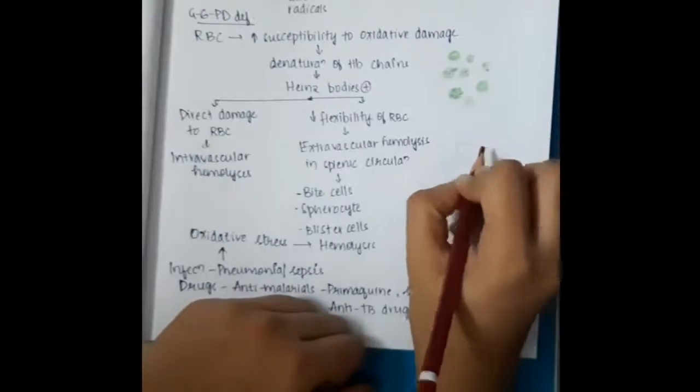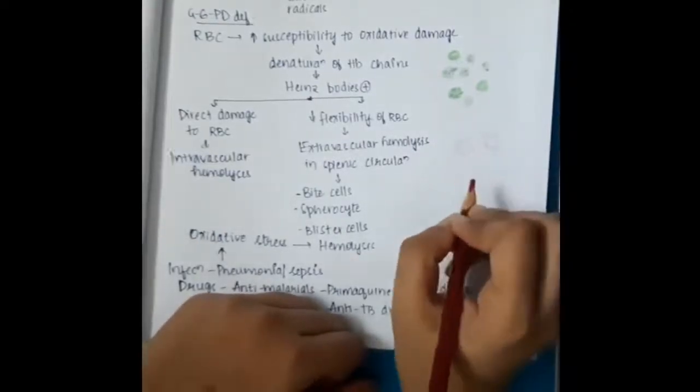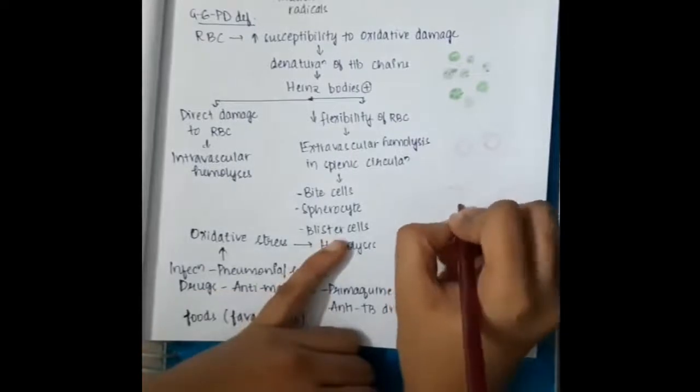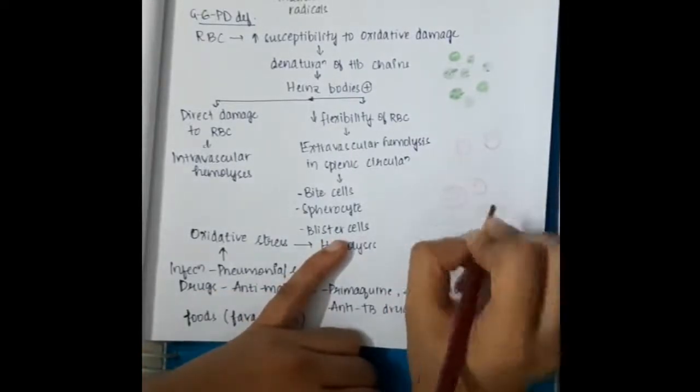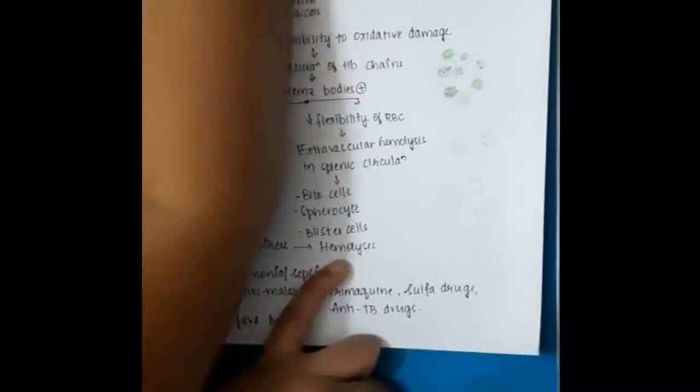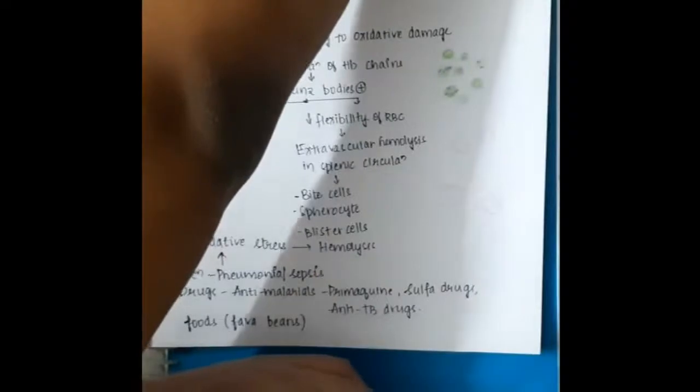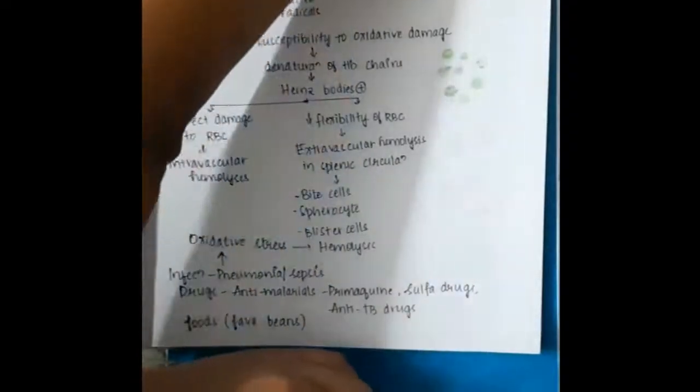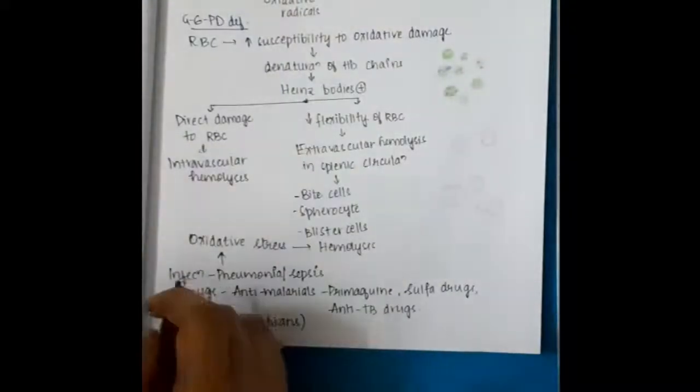Along with that we also see bite cells and spherocytes. In these bite cells, the small bite which is there is not due to hemolysis, but it is because the Heinz body which is normally present there is not stained properly. As a result, it looks as though the cell has been eaten up by something, so we call it a bite cell. But truly there is a Heinz body there hiding because of not getting stained.